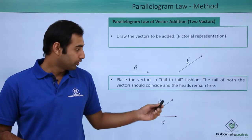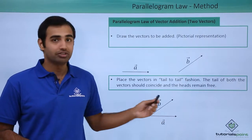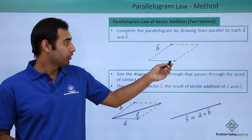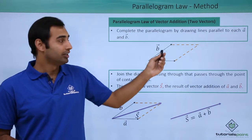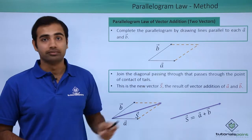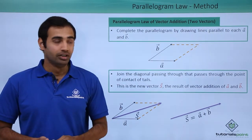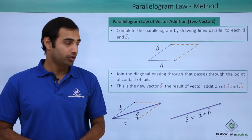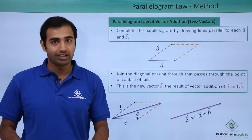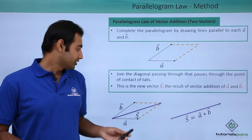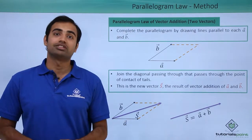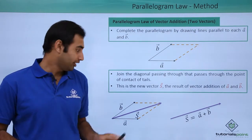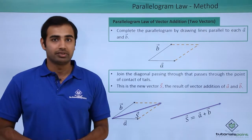In order to add them, I have to draw two lines parallel to each of the vectors in this fashion. So here you can see I have drawn one set of lines parallel to B and the second line parallel to A, and this completes my parallelogram. Now in order to obtain the resultant vector using parallelogram law, all I have to do is join the body diagonal of the parallelogram that passes through the point of coincidence of tails of the vectors. So this diagonal will be considered as my resultant.